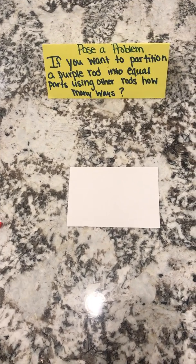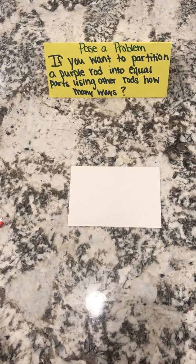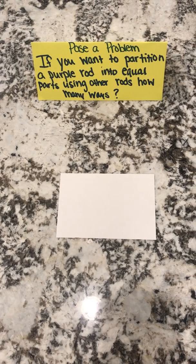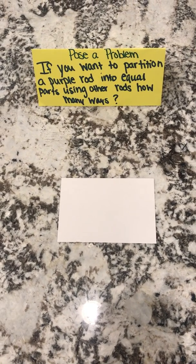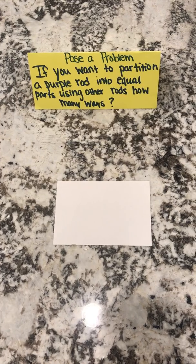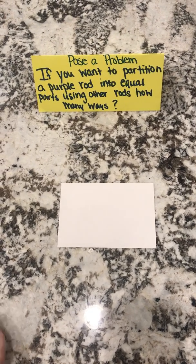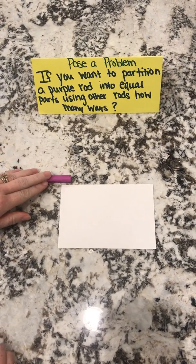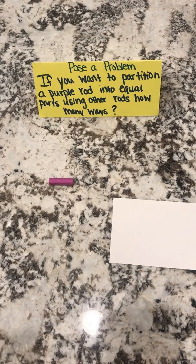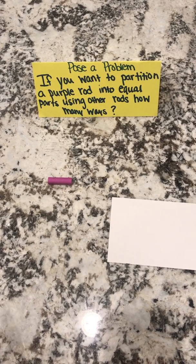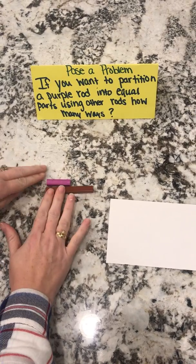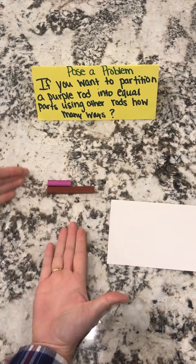We are going to be looking at a posed problem: if you want to partition a purple rod into equal parts using other rods, how many ways could you do it? I'm going to start with my whole, or my total, my purple Cuisenaire rod, and I'm going to use my other colored rods to decide how I can partition it.